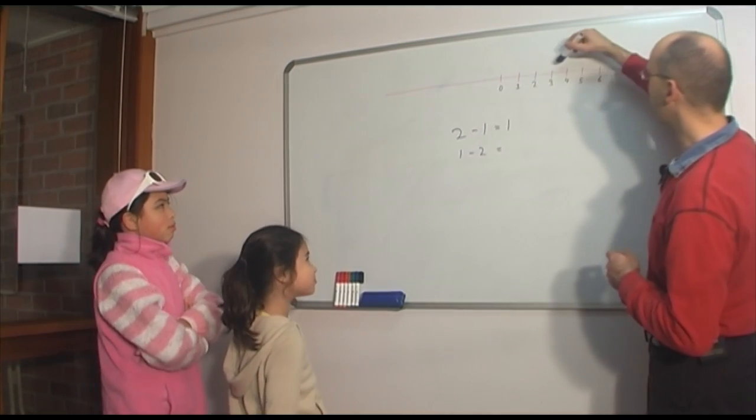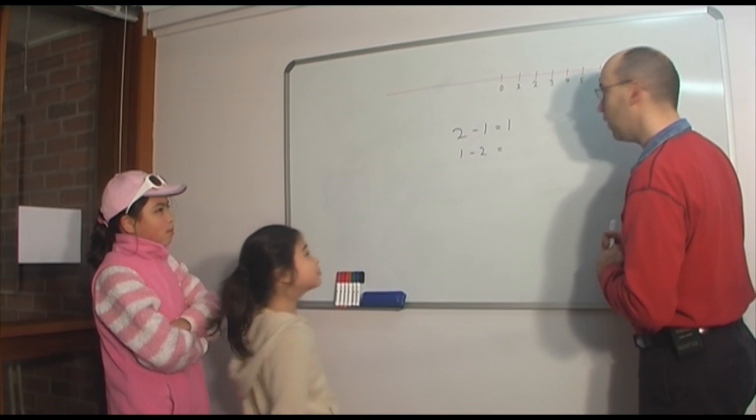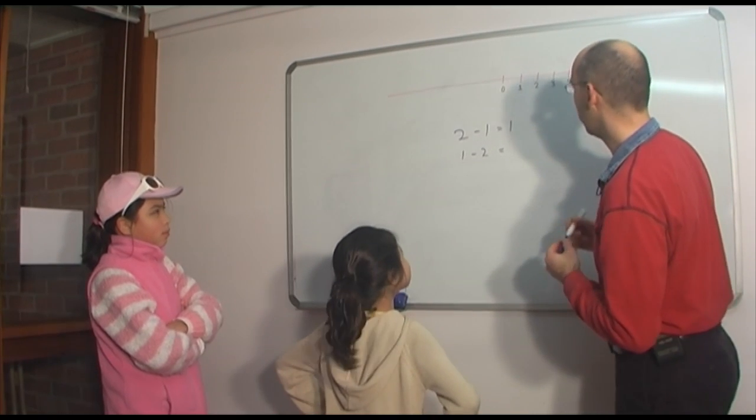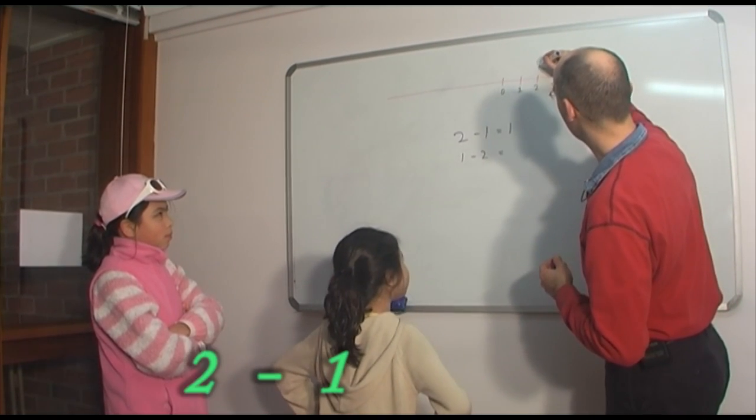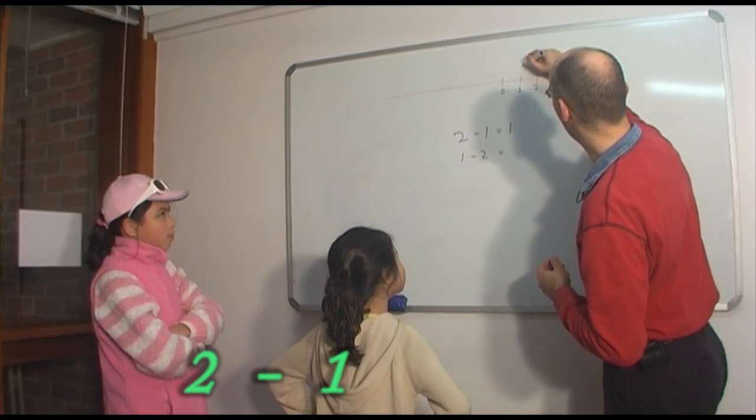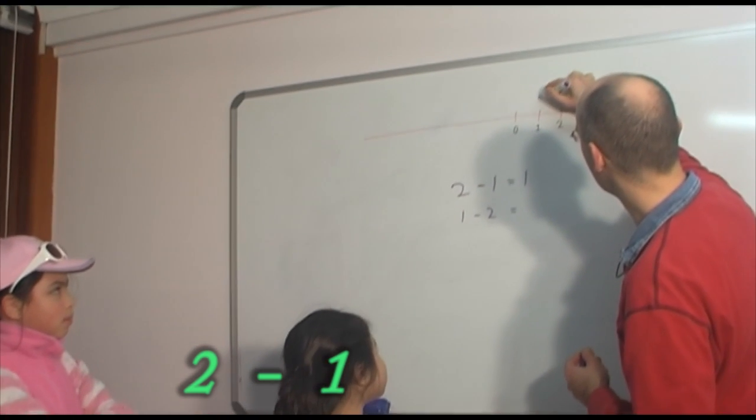Yeah, so when we go on the number line here, what do we actually do? First one, we start here, right? And we go 1 back. So the answer is 1.